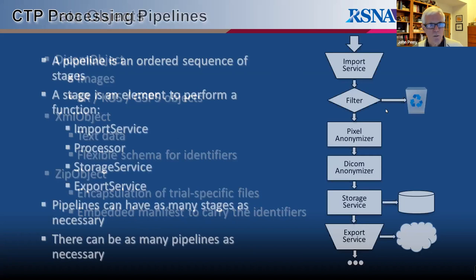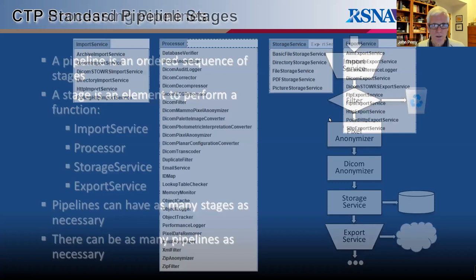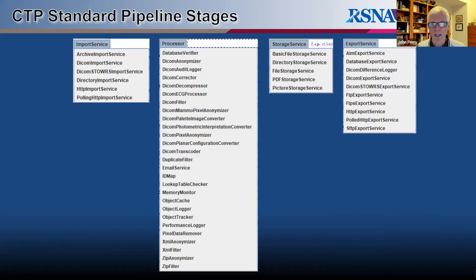CTP organizes its processing into pipelines — an ordered sequence of pipeline stages, each designed to do some particular thing. Data objects enter the head end of a pipe through an import service and flow sequentially through the stages. CTP has about 45 standard pipeline stages grouped into four categories. There are half a dozen import services; the most commonly used are the DICOM import service and the HTTP import service.